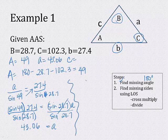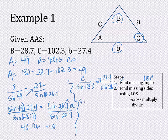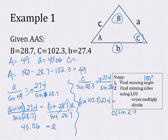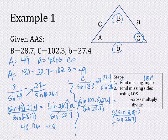Now find little c using the same process: little c over sine of big C — big C was 102.3 — equals 27.4 over sine of 28.7. Cross multiply: sine of 102.3 times 27.4 equals c times sine of 28.7. Divide by sine of 28.7 to isolate c. When you type it all in the calculator — being careful with parentheses — you get c equals 55.75.